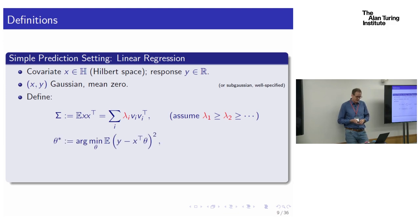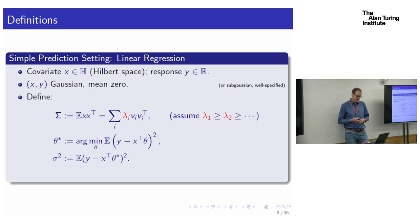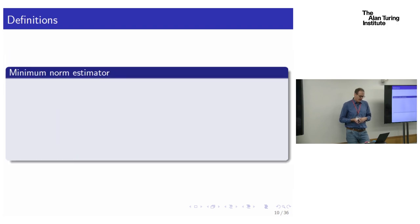There is an optimal parameter vector — the one that minimizes the expected squared error. In classical linear regression with quadratic loss, that parameter vector is called theta-star, and its expected squared error is sigma-squared. We're always in the setting where sigma-squared is greater than zero.